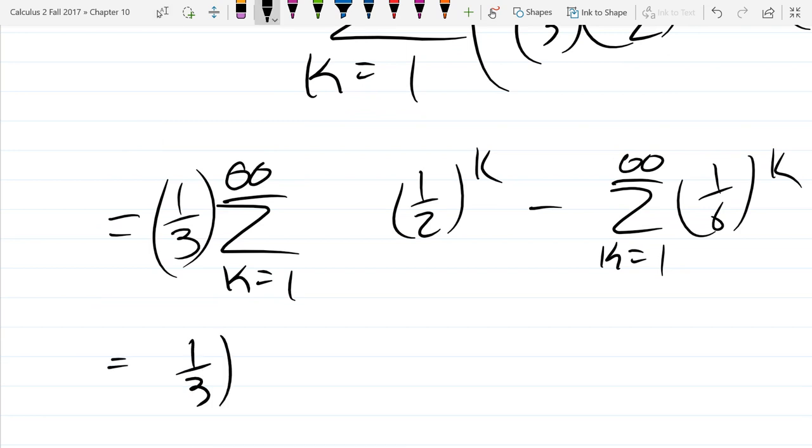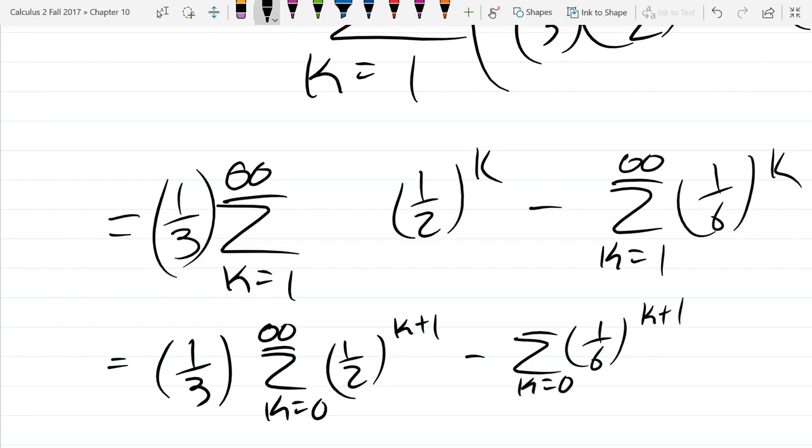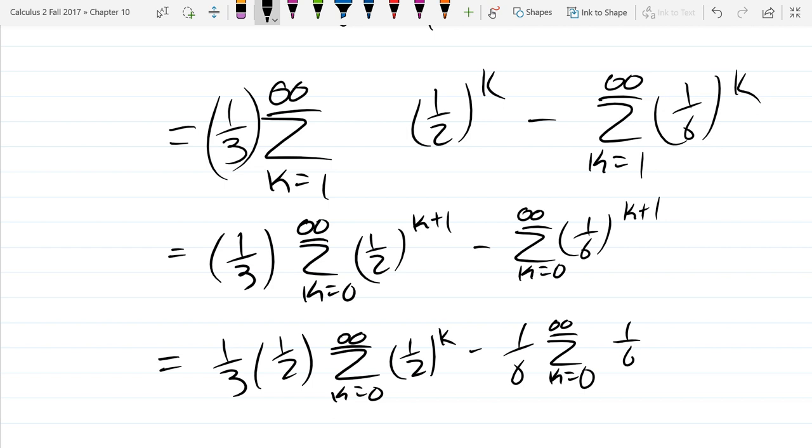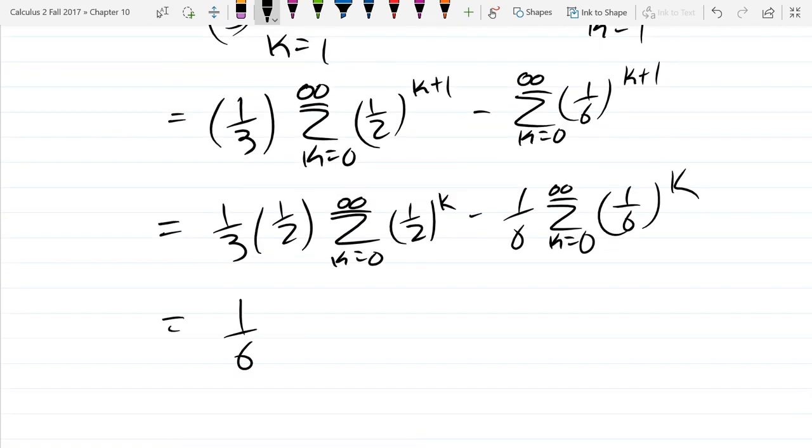We can write it. So I can start at K equals 0 to infinity. And then go K plus 1. Like that. So drop it by 1 and compensate by upping it by 1. Minus summation, 1 sixth to the K plus 1. And now finally we're going to factor out 1 half and 1 sixth. And now we can use the 1 over 1 minus R minus 1 sixth times 1 over 1 minus R. And whatever that adds up to is our summation.